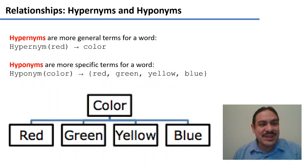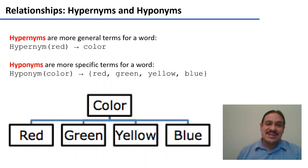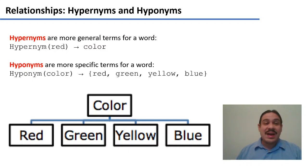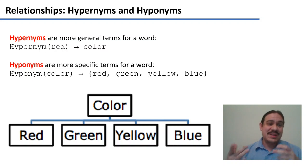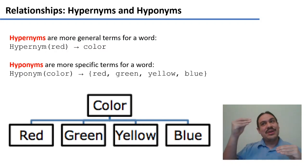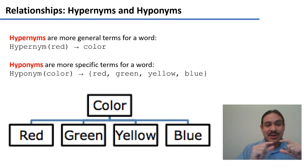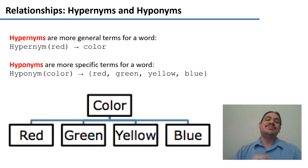One more type of relationship: hypernyms are general terms — a more general term for a word. A hypernym for the word 'red' is 'color,' because red is a kind of color. Hyponyms are more specific terms. For example, hyponyms of 'color' are red, green, yellow, and blue.